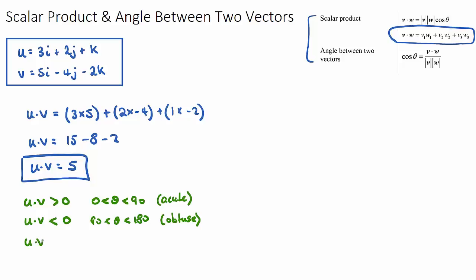And maybe pause the video and have a think, what would this mean? If the dot product was zero, would it be acute or would it be obtuse? Well, it's actually going to be the angle between the two vectors will be exactly 90 degrees, which is perpendicular.